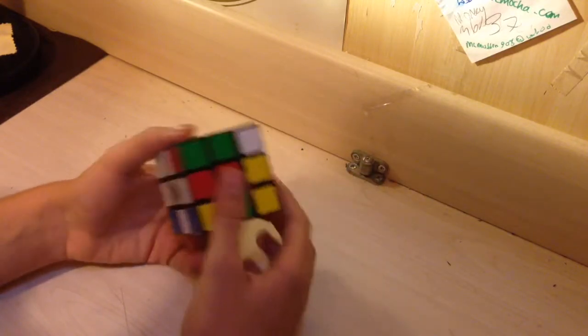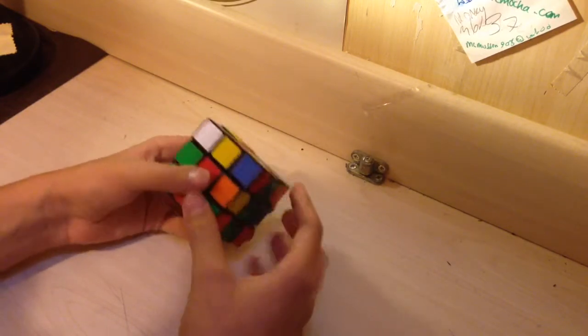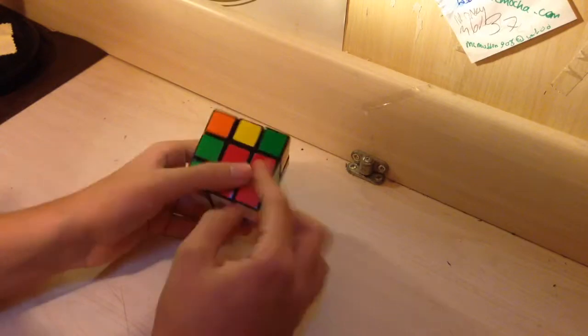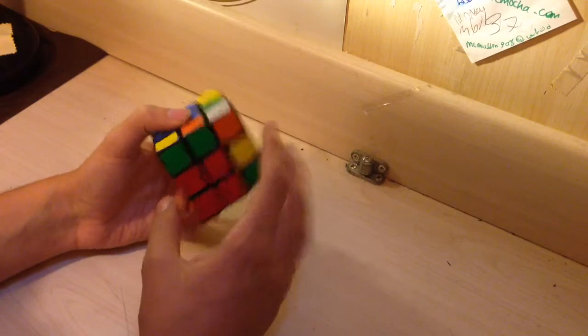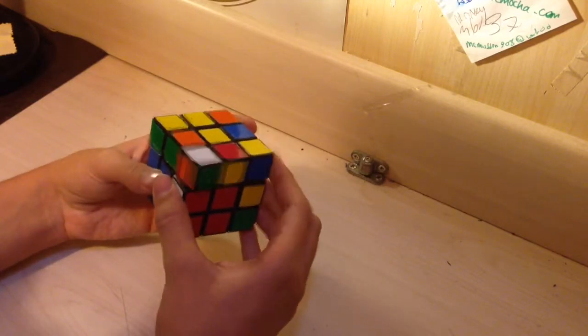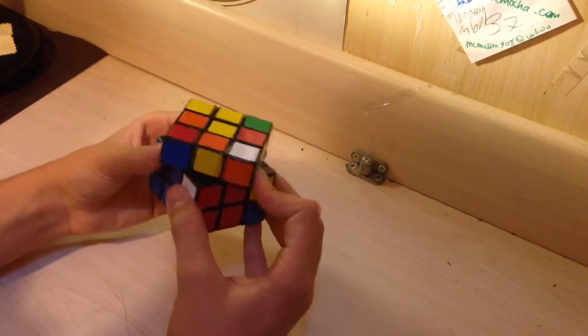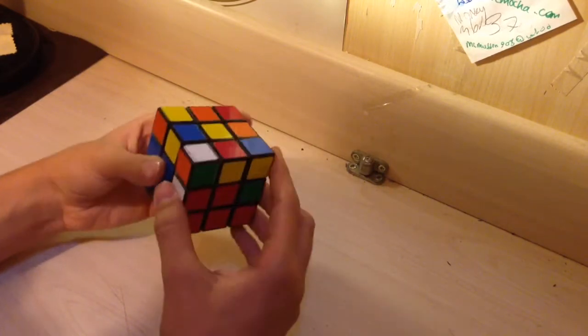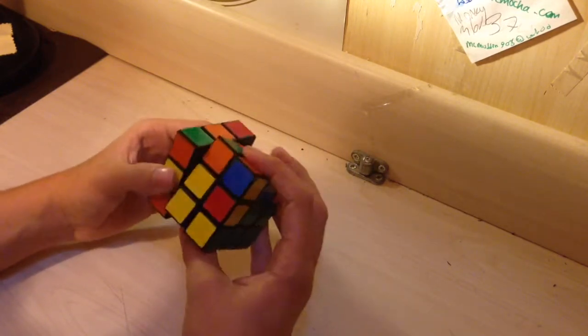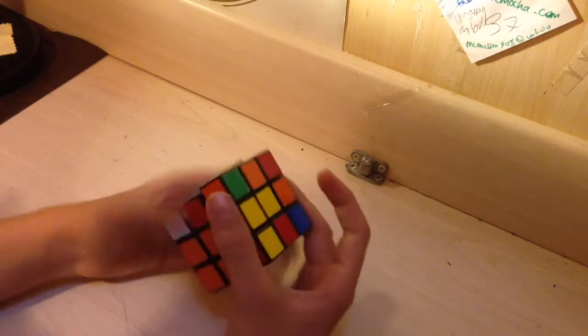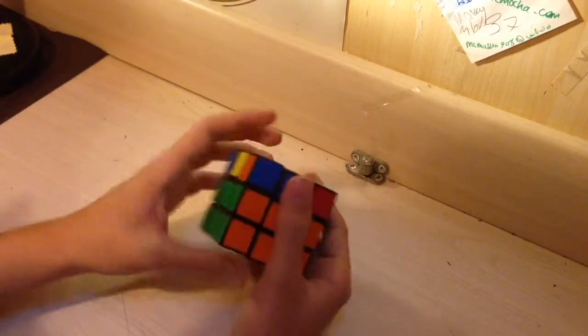That one goes there. And then we have normal pairs here. So, let's do this. Okay, I will do like this. Already. This is a matching pair, so I will do this.